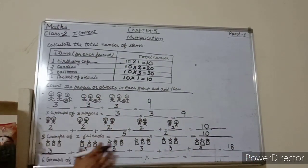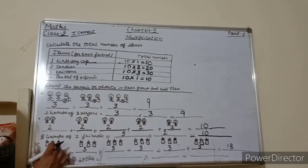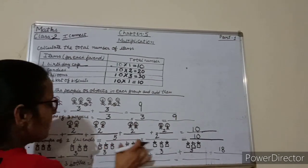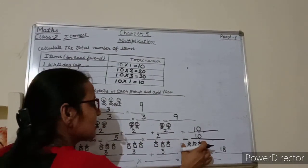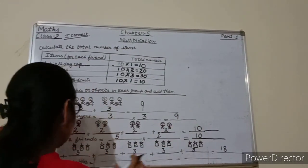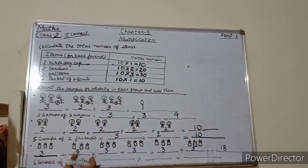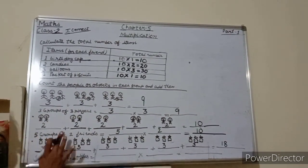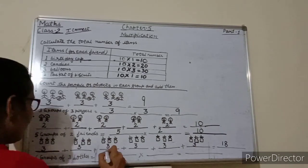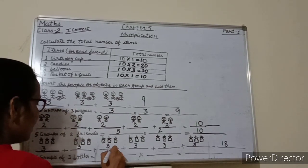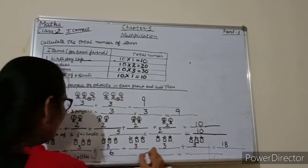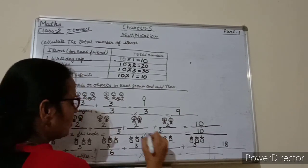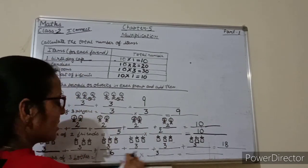And how many groups are there? 1 group, 2 groups, 3 groups, 4 groups, 5 groups, 6 groups. And in each group, how many bottles are there? 3 bottles. So here we will write 6 into 3.